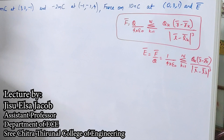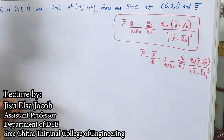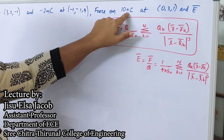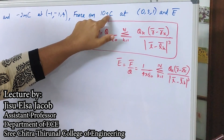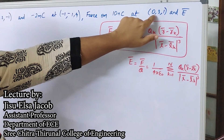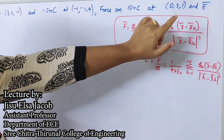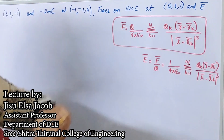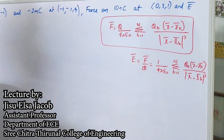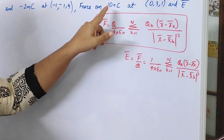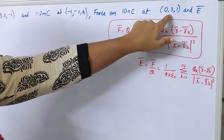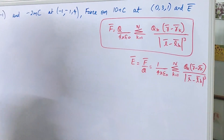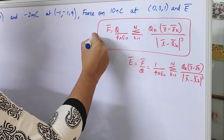In this problem we are asked to find the force experienced on the charge 10 nanocoulomb at position (0, 3, 1), and also to find the electric field intensity at this point. For finding the force experienced by a charge at this position and the electric field intensity at that position, first you should know which are the main equations.